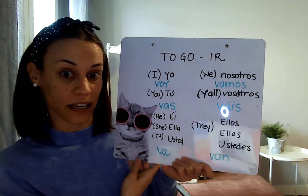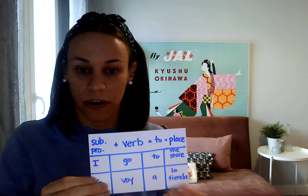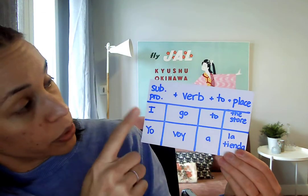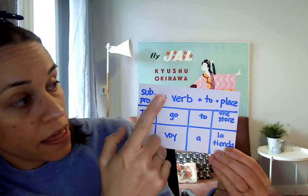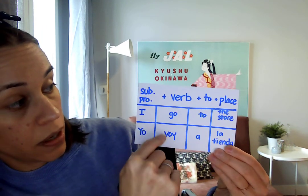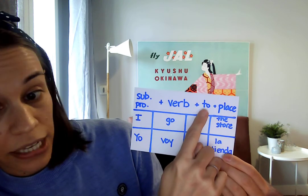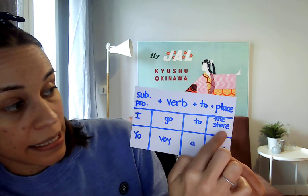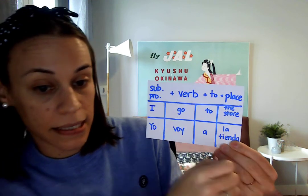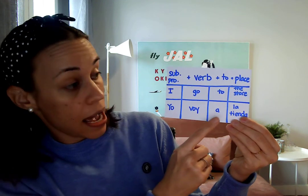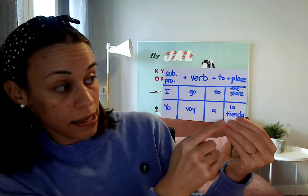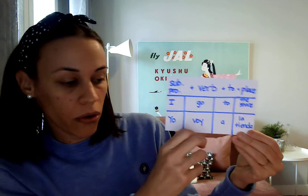So there we've gotten started. Next, I would like to introduce you to the way we put our sentences together. First we will have our subject pronoun — I, in this case. Then we'll have our verb, 'go,' then 'to,' and then the place, 'the store' in this case. So we will say: yo voy a — 'to' — a la tienda, 'the store.'